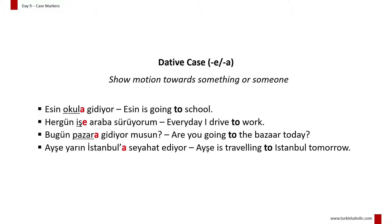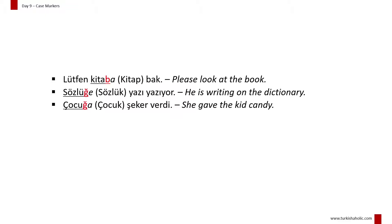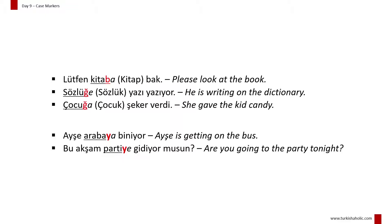In the last example, if you use a dative case suffix with a proper noun, you need to use an apostrophe between the noun and the suffix. Don't forget that some words have consonant mutation when a suffix is added. If a word ends in a vowel, we insert the buffer letter -y- between the dative case suffix and the noun.